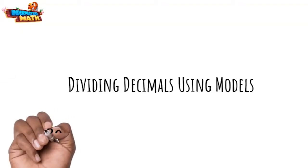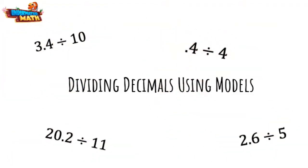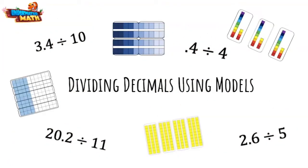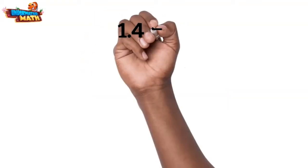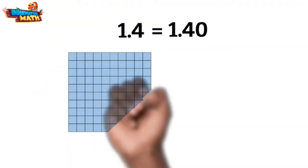Welcome mathematicians to Underwater Math. Today we will be dividing decimals using models. Here we go! Hundredth grids and base 10 blocks help us visualize decimals. Let's start by looking at a decimal and the model for it. We have 1 and 4 tenths, which is equal to 1 and 40 hundredths.